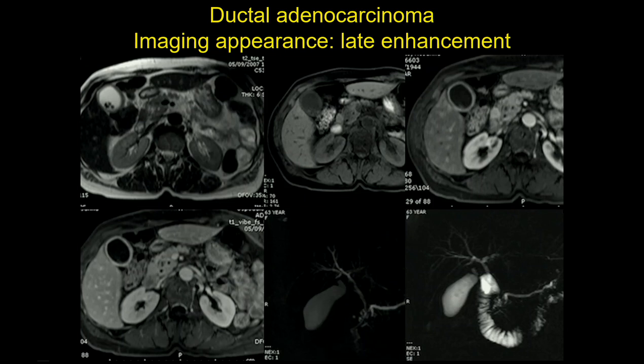Sometimes, especially when small, this tumor can show late enhancement, so you must be very aware of the timing of acquisition. If you acquire too late, you can miss the pancreatic phase and miss this tumor. This lesion was easily appreciated in the unenhanced and arterial phase, but in the venous phase there is homogeneous enhancement, making it quite difficult to see.